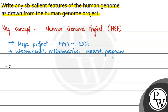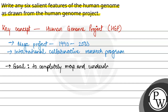What was the goal of HGP? The goal of the Human Genome Project was to completely map and understand all of the genes of human beings.